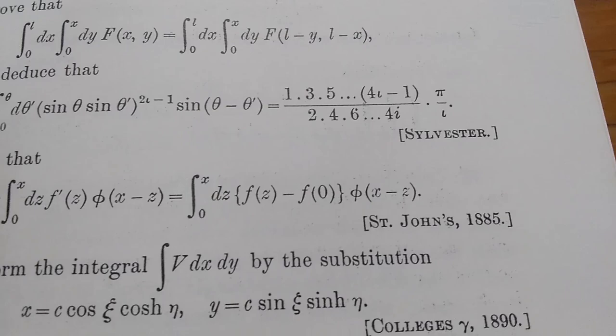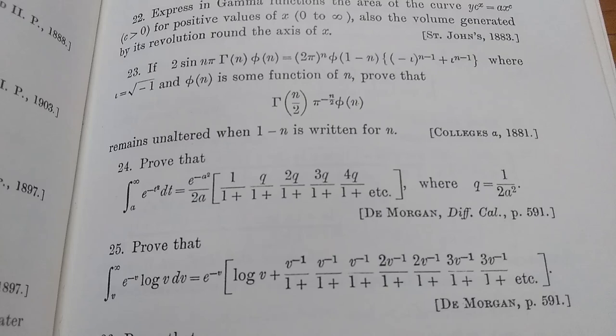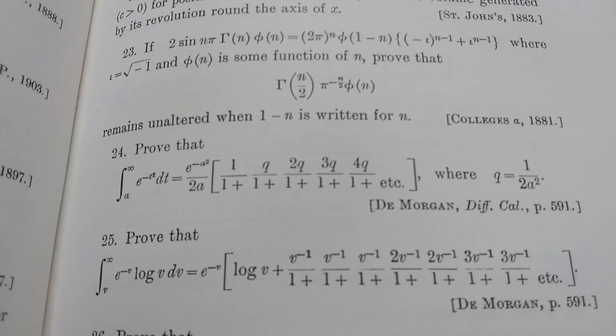Here's another example. Look at that, DeMorgan differential calculus page 591. So that's where that comes from. I mean, DeMorgan, that's like the DeMorgan from DeMorgan's laws of set theory. You know, that's the DeMorgan.